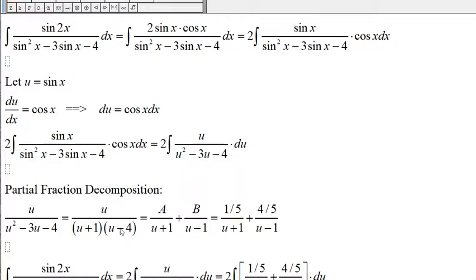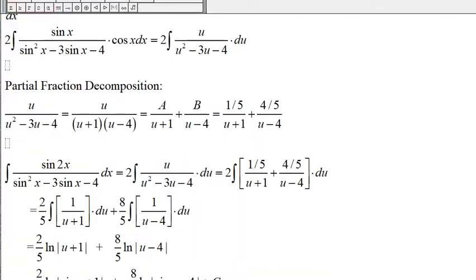To do the partial fraction decomposition we will set this equal to a constant A over the factor u plus 1, plus the constant B over the factor u minus 4. And then A will be 1 fifth and B will be 4 fifths.